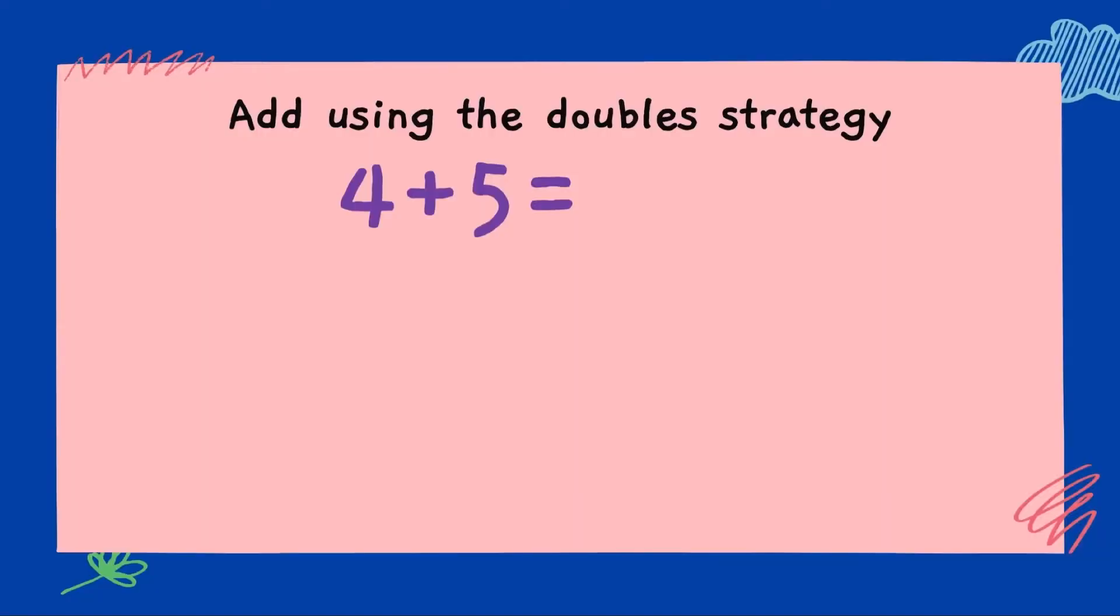Let's do something a little challenging now. Let's add this using the double strategy. What we need to do is, we need to double the smallest number. Here we have 4 plus 5. 4 is our smaller number. So, 5. Let's split it.